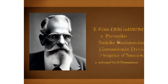Durkheim's theory has also been used to explain the rise of crime in modern societies. Durkheim argued that crime is a product of social disorganization, which occurs when the division of labor breaks down. Social disorganization can lead to anomie, which is a state of normlessness. Anomie can lead to crime, as individuals may be more likely to engage in criminal behavior if they do not feel bound by social norms.